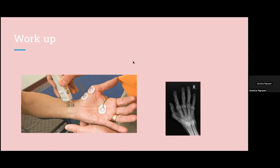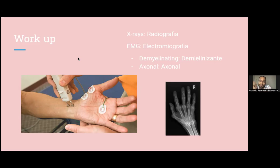Could you also do an ultrasound and a nerve study? — Very good. We do want an x-ray because many differentials include fractures — maybe she fell and there's a scaphoid fracture, a hook of hamate fracture, or a distal radial fracture. We also want to do an EMG — electromyografía — and x-rays are radiografías in Spanish.